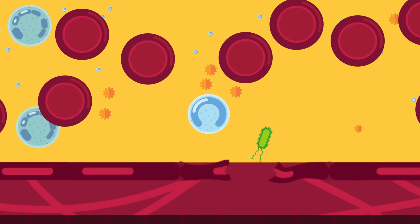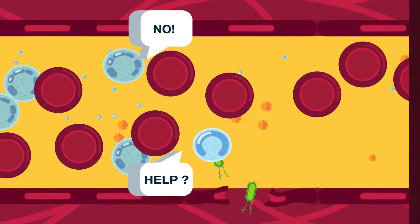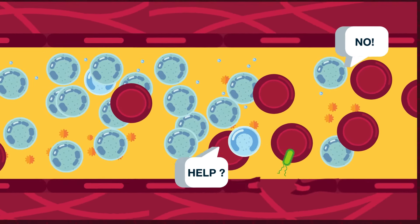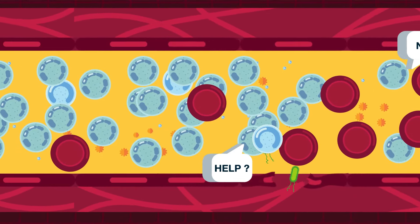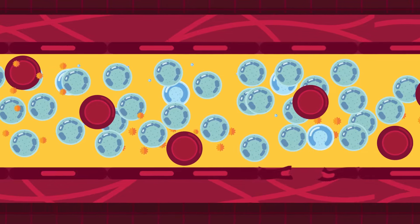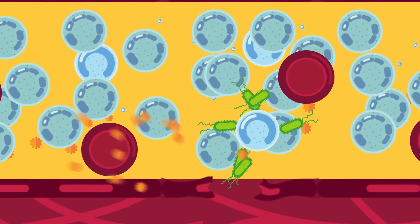However, the abnormal cells in leukemia do not function in the same way as normal white blood cells. The leukemia cells continue to grow and divide, eventually crowding out the normal blood cells. The end result is that it becomes difficult for the body to fight infections, control bleeding and transport oxygen.